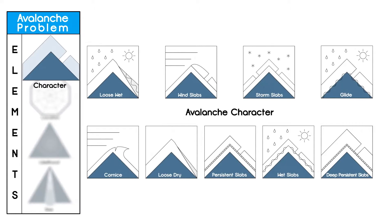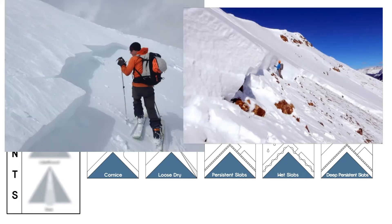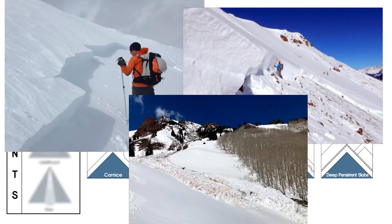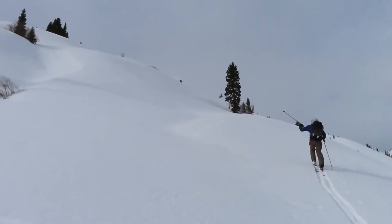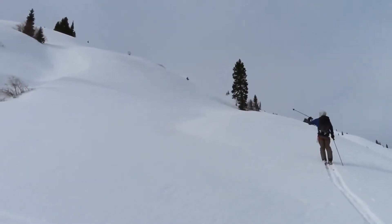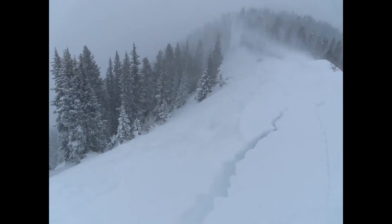These types include wind slabs, persistent slabs, or loose-wet avalanches, among others. Each avalanche type has different travel advice, signs of instability, and terrain management strategies.